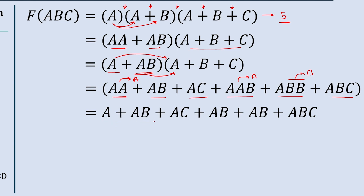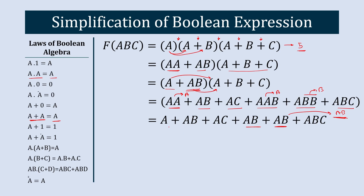Now we can see AB + AB. Since A + A results in A, AB + AB results in AB. So in place of these two AB terms we can write a single AB. We also have A + AB in this equation.